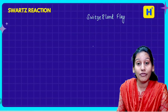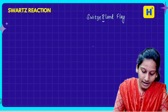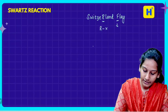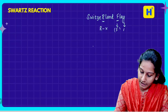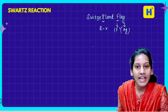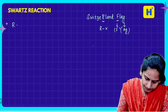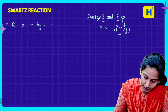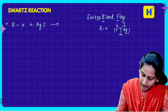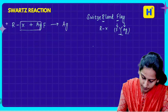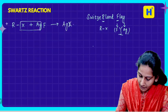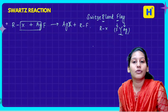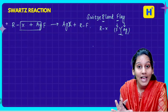This is the Swartz reaction — Switzerland flag. So R stands for alkyl halide, and F stands for fluoride, and AG stands for silver. So the reaction is simple: alkyl halide plus AgF. These two combine to give silver halide and we get alkyl fluoride. This is the Swartz reaction.